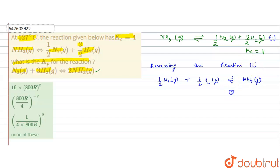So its Kc would be, that is Kc dash would be 1 by Kc. It means it is 1 by 4. Now we have this equation. To make this reaction, if we multiply this reaction by 2, we reach to this reaction.